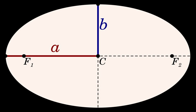The transverse axis of a hyperbola coincides with the major axis. In a hyperbola, a conjugate axis or minor axis of length 2b, corresponding to the minor axis of an ellipse, can be drawn perpendicular to the transverse axis, the latter connecting the two vertices of the hyperbola, with the two axes intersecting at the center of the hyperbola.